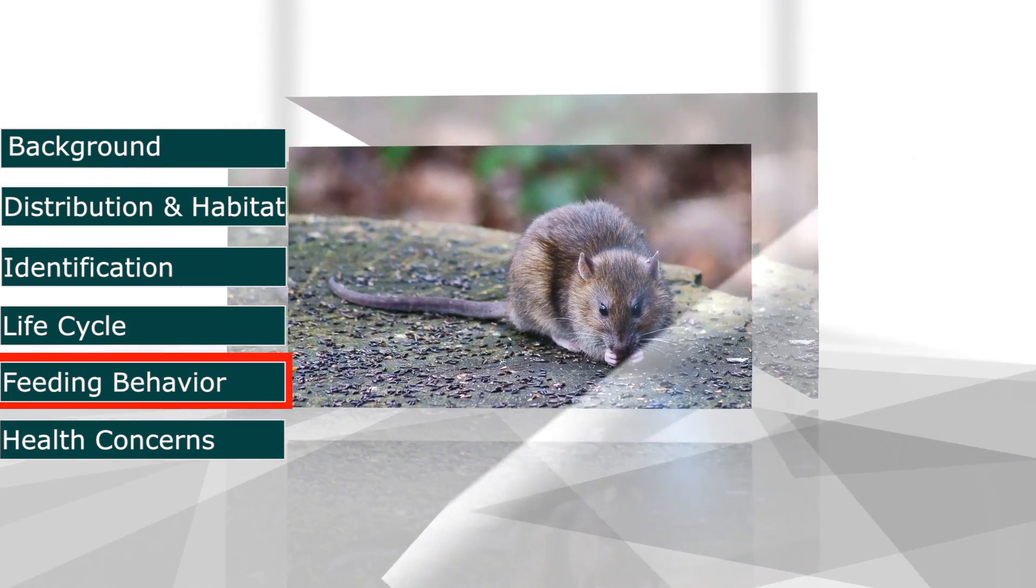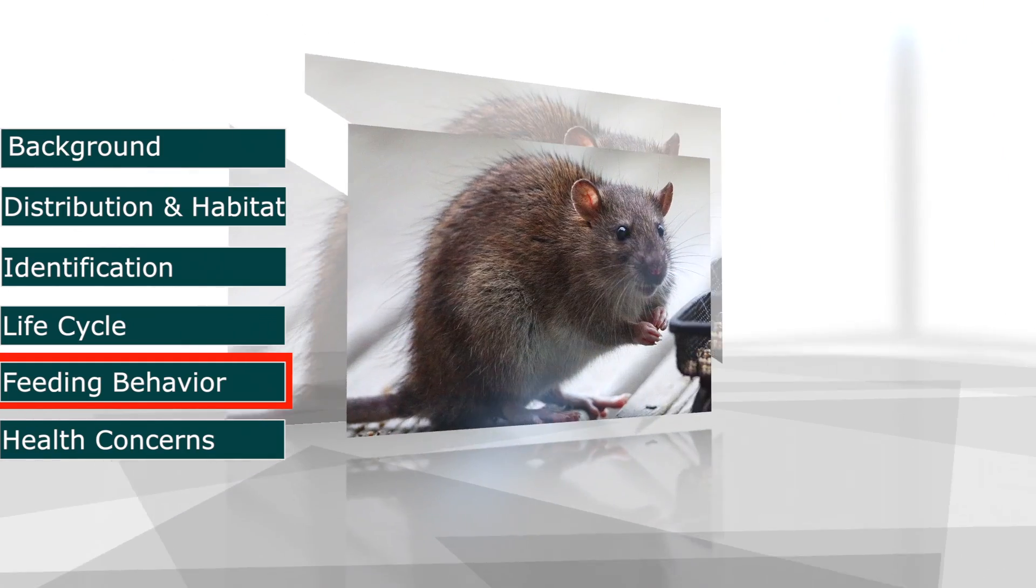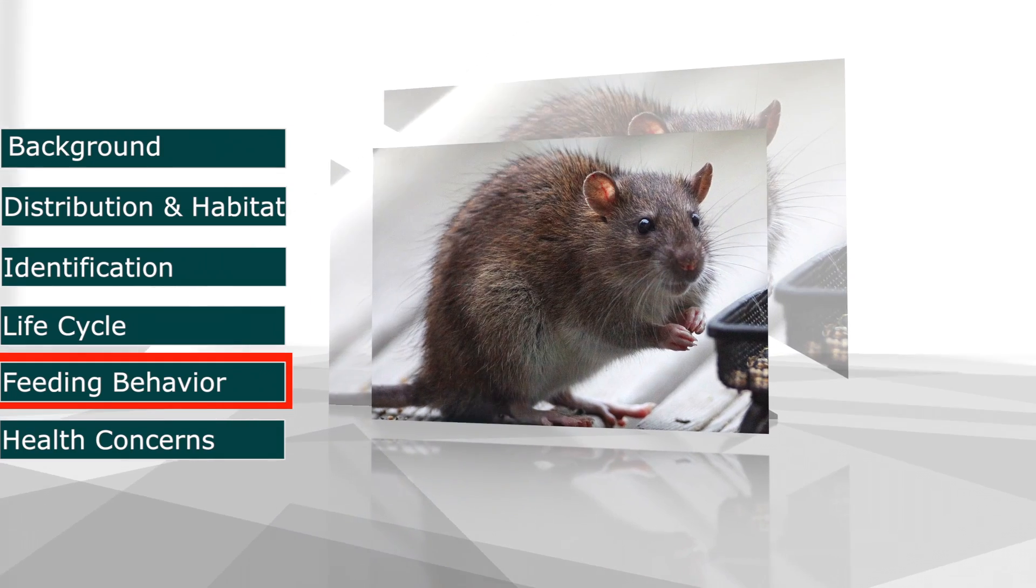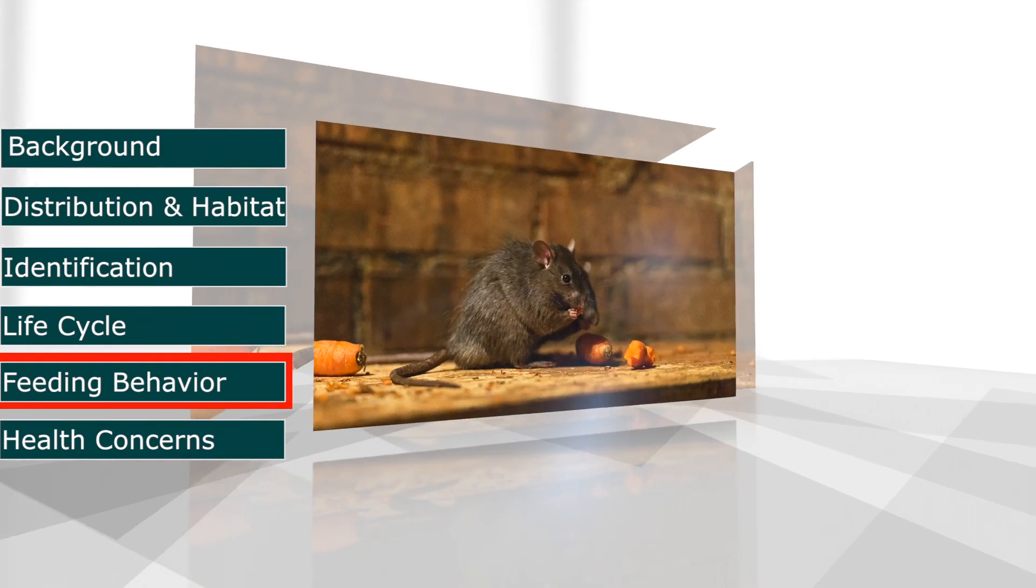Norway Rats are omnivores and will feed on any food available. Because of their poor vision, they rely mainly on their strong sense of smell to find food. Norway Rats require daily water to survive, usually about 1 ounce of water per day.